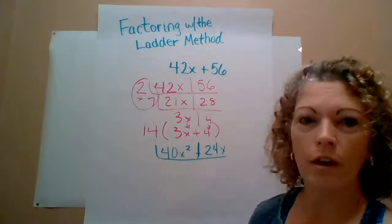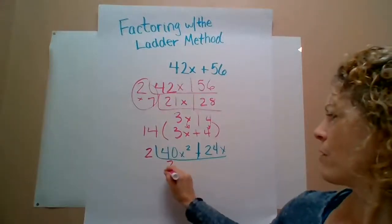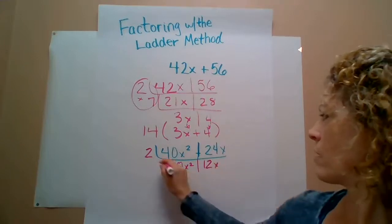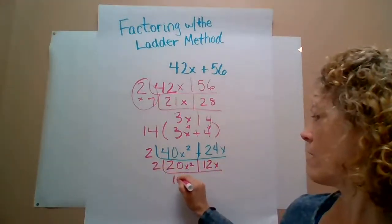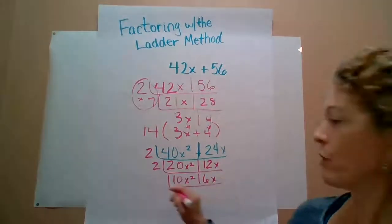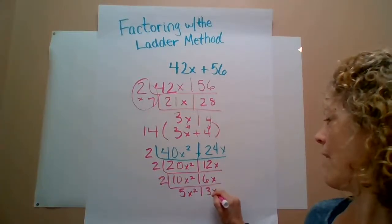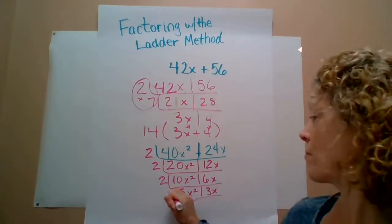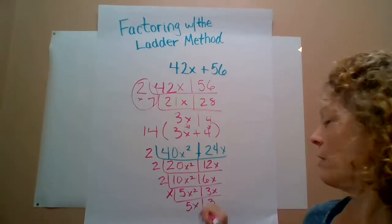So students are going to take out a common factor. We'll start with two. So that leaves us with 20x squared and 12x. And then they take out another two: 10x squared, 6x. Take out another two: 5x squared and 3x. And now they can see the only thing that is still in common is the x: 5x and 3.